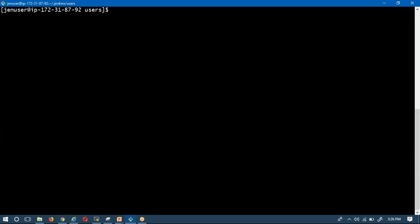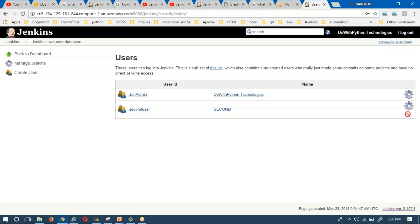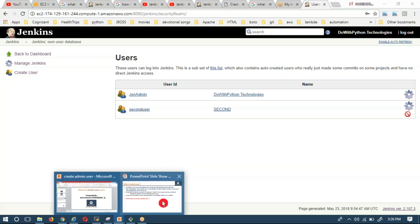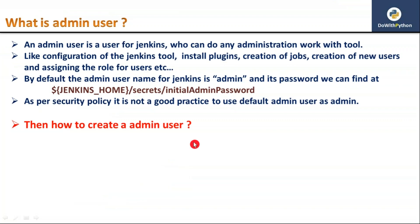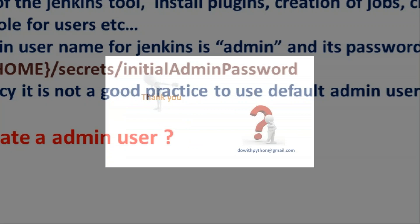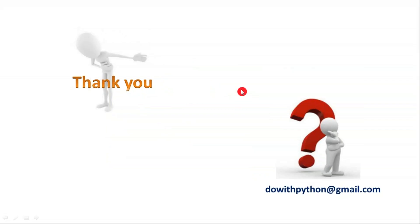This is the simple way to create a Jenkins admin user. Remember that in real time you should not use the default admin username 'admin', because that password is always stored under secrets as initial_admin_password, which is a security risk. That's why we changed it. Thank you for watching this video — do subscribe to my channel so you get notifications whenever new videos are posted. Bye!